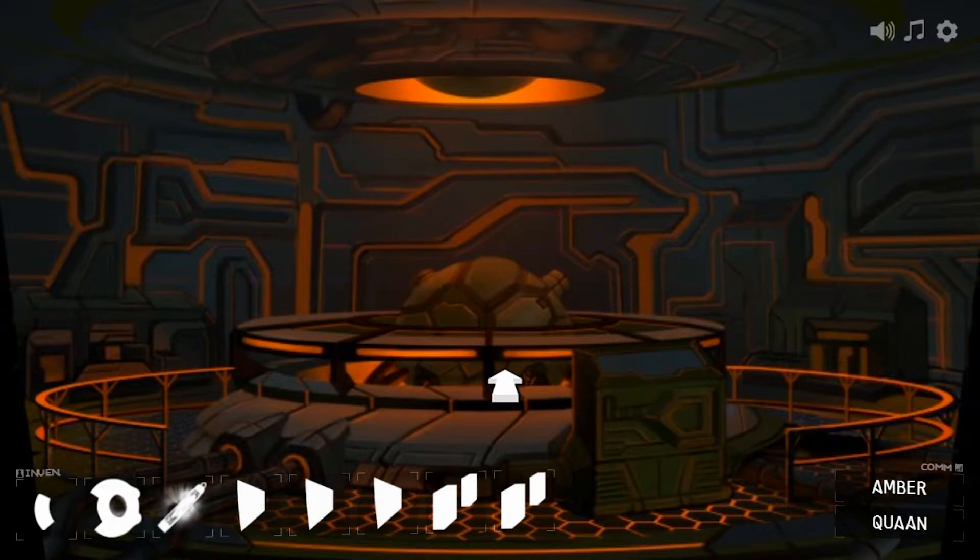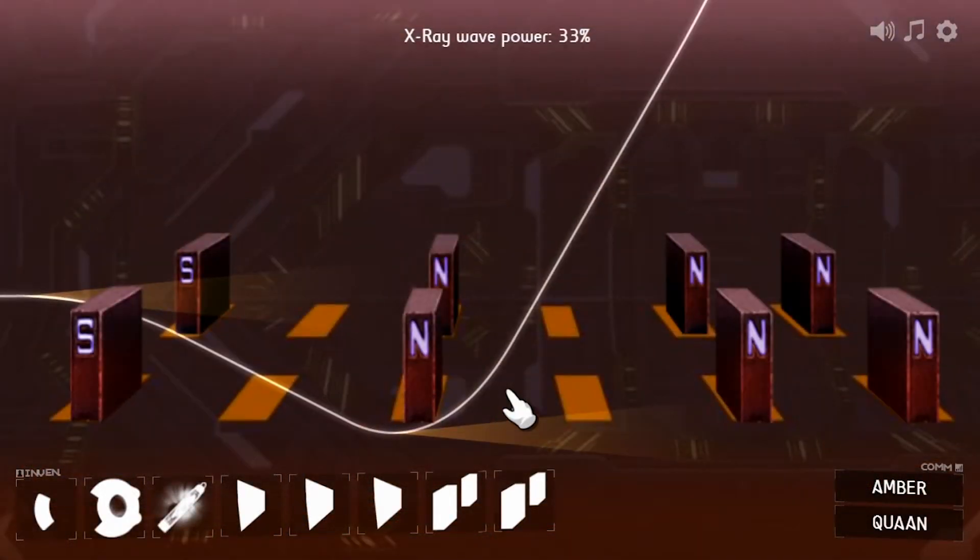This is the ship's synchrotron. No vessel should leave orbit without one. Our electron beam is that white line. You can see that when the beam passes between a pair of magnets, it bends.